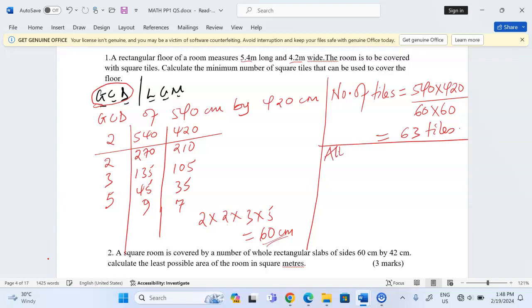Alternatively, we can talk about across the length, we're going to have 540 divided by 60, and this is going to give us 9 tiles across the length. Then across the width, when we take 420 divided by 60, we get 7 tiles. So for us to get the total number of tiles, it will be 9 times 7, which still gives us 63 tiles.